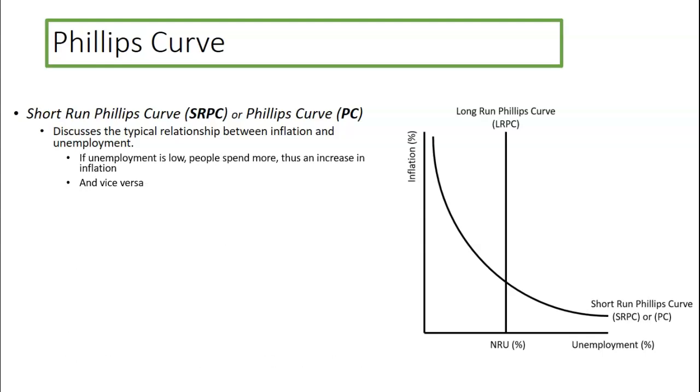It essentially comes down to this. If unemployment is low, meaning you're to the left on the x-axis, then more people are working. If more people are working, they're going to be spending more. If you spend more, then that usually increases inflation, and vice versa. If there's higher unemployment, people don't spend as much, and so typically inflation tends to go down, hence why it's curved that way.